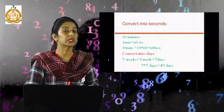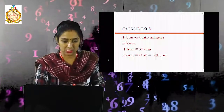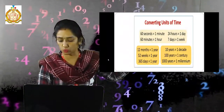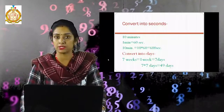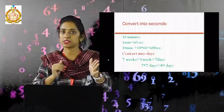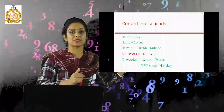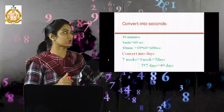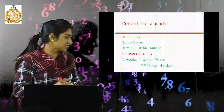Now convert into seconds: 10 minutes. We know that 1 minute equals 60 seconds. So 10 minutes equals 60 multiplied by 10, which equals 600 seconds.